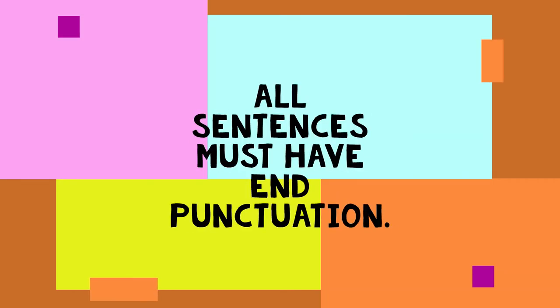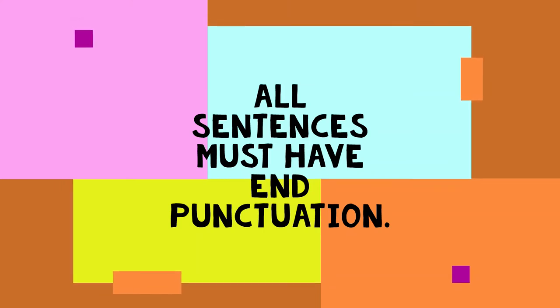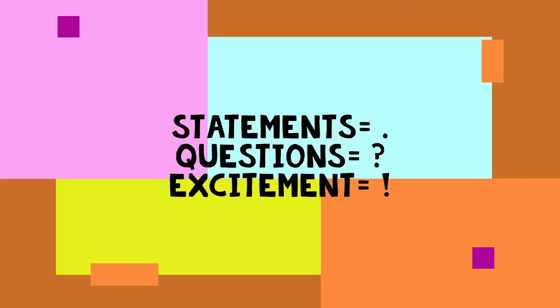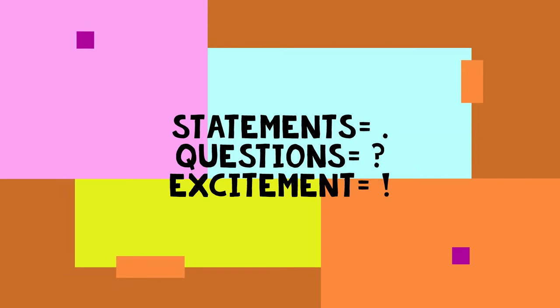The next thing you should check for is that all of your sentences have end punctuation — they have to have end punctuation. All of your ideas are marked with end punctuation to show the end of one idea and the beginning of the next. If you're writing a fact or a statement, you should put a period at the end. If you're asking a question, you use a question mark, and if you're showing excitement or yelling, you use an exclamation point.